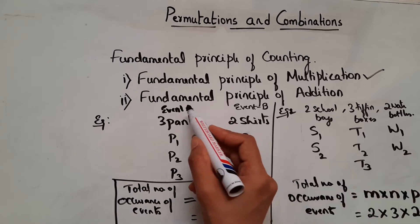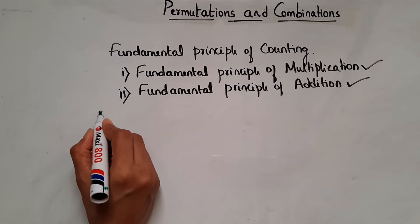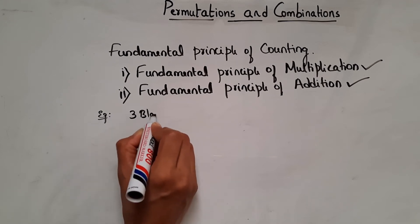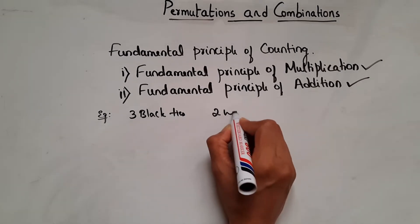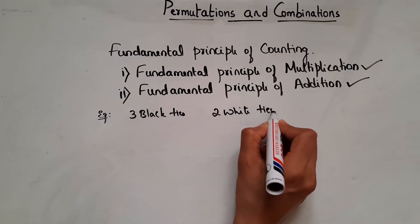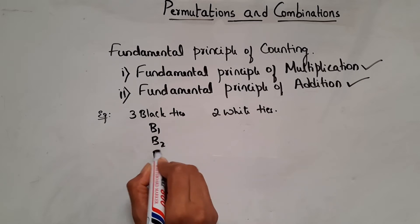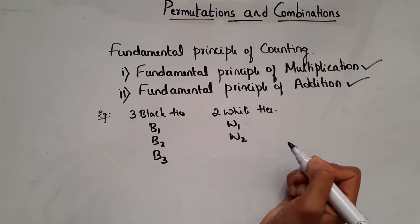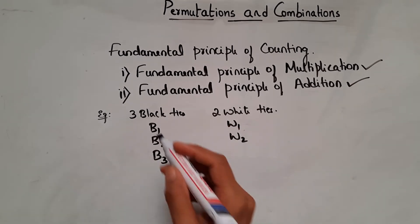Now let us move on to the second type, that is fundamental principle of addition. But before that, pause the video and note this down. Now let me give an example for the second type. Let us say you have 3 black ties and 2 white ties. So we have B1, B2, B3 and W1, W2. So here, can you tell me how many ways you can wear these ties?